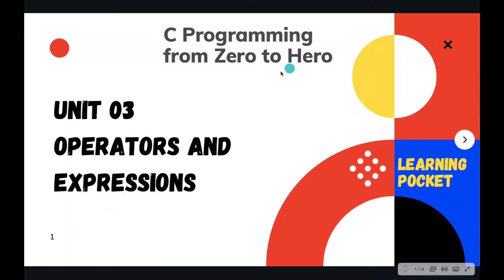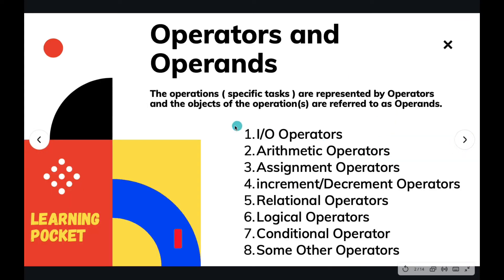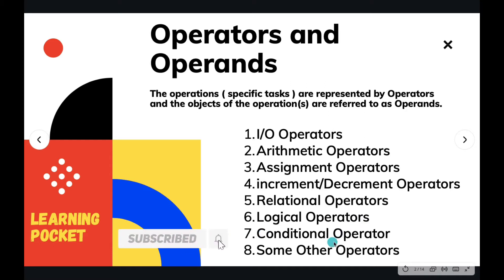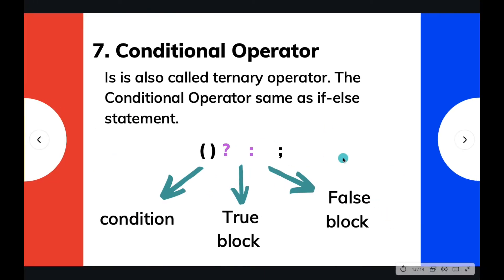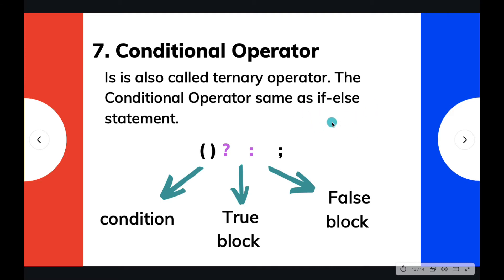Welcome back to unit 3 on operators and expressions. We have covered almost all the operators and are left with conditional operators, along with some other operators to discuss. The conditional operator, as the name suggests, behaves as per the conditions given to it. It is somewhat similar to an if-else statement: if the condition is true, something happens; if the condition is false, something else happens.